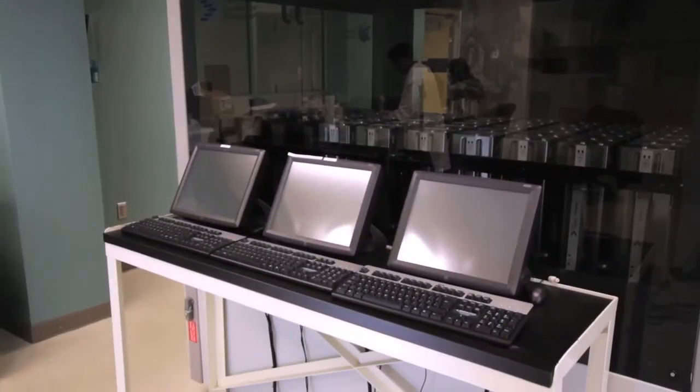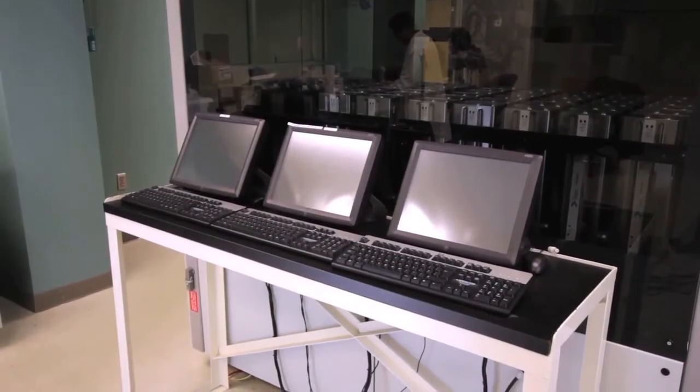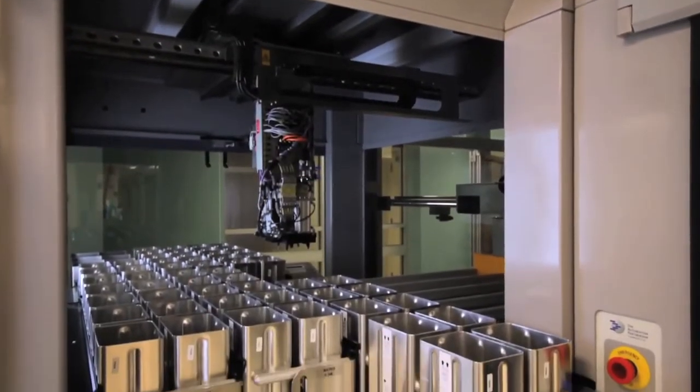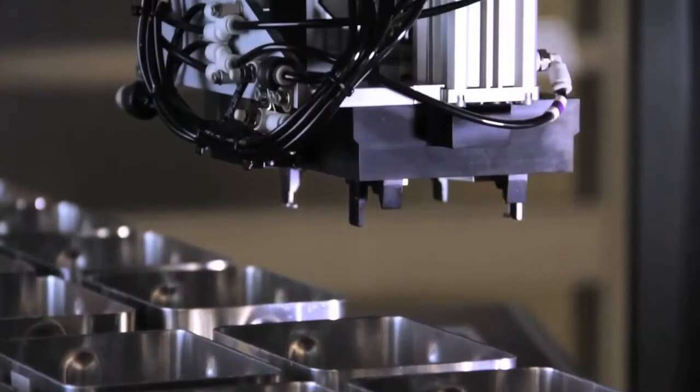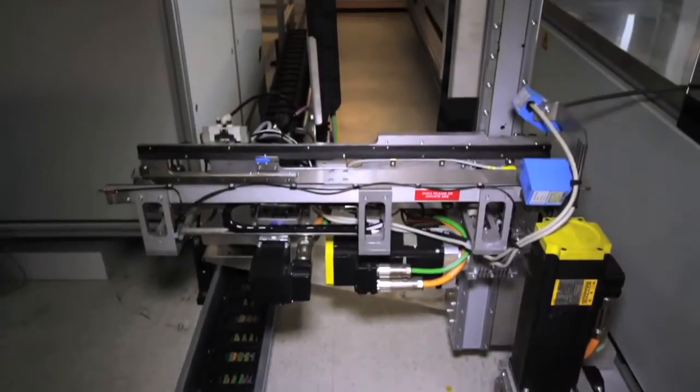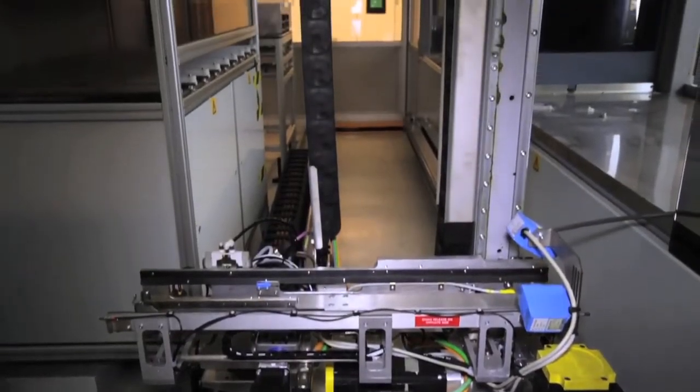The system has three data entry stations for sample information input. Microplates are processed through the barcode reader and printer, where the sample is submitted, tagged and provided to the robot, which places the sample on the transfer belt and then transfers it into the proper storage location.